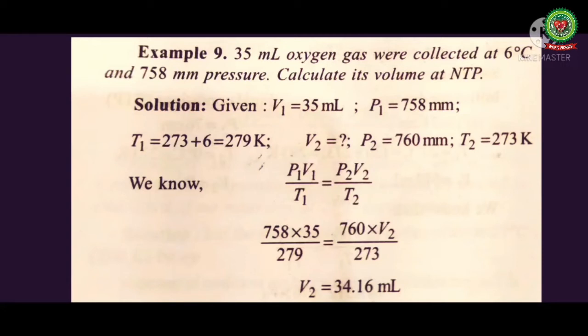Next numerical: 35 ml oxygen gas was collected at 6 degrees Celsius and 758 mm pressure. Calculate its volume at NTP. Here we will use equation P1 V1 upon T1 equals P2 V2 upon T2. V1 is 35 ml, P1 is 758 mm, and T1 is 6 degrees Celsius, converting it into Kelvin scale will be 279 Kelvin.